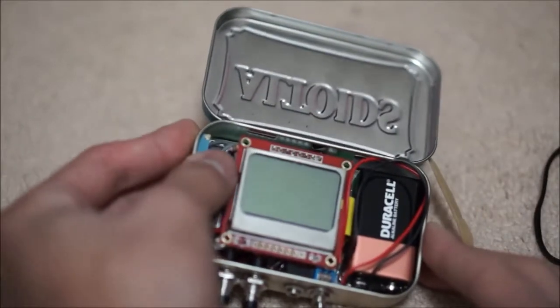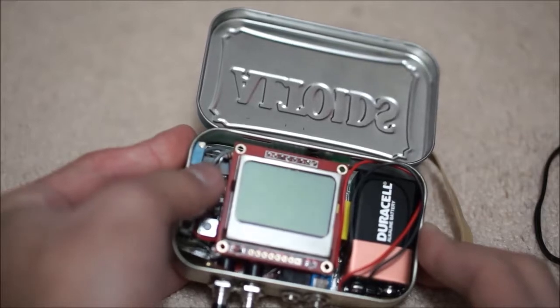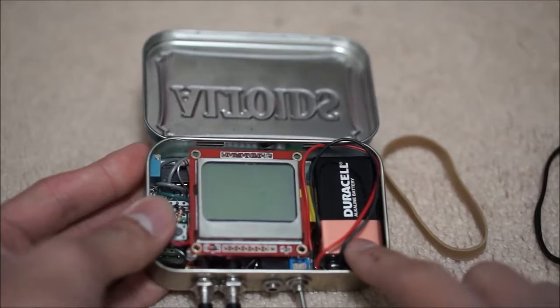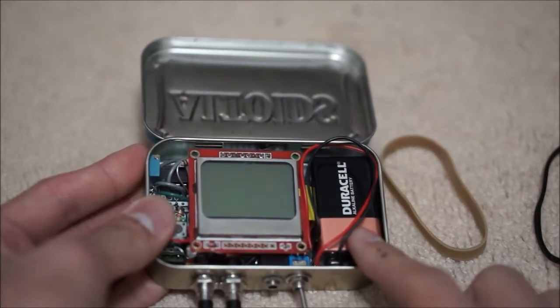Over here, to the side, we have a one meg trim pot, and this is used to set the trigger voltage level. This is a nine volt battery used to power it.